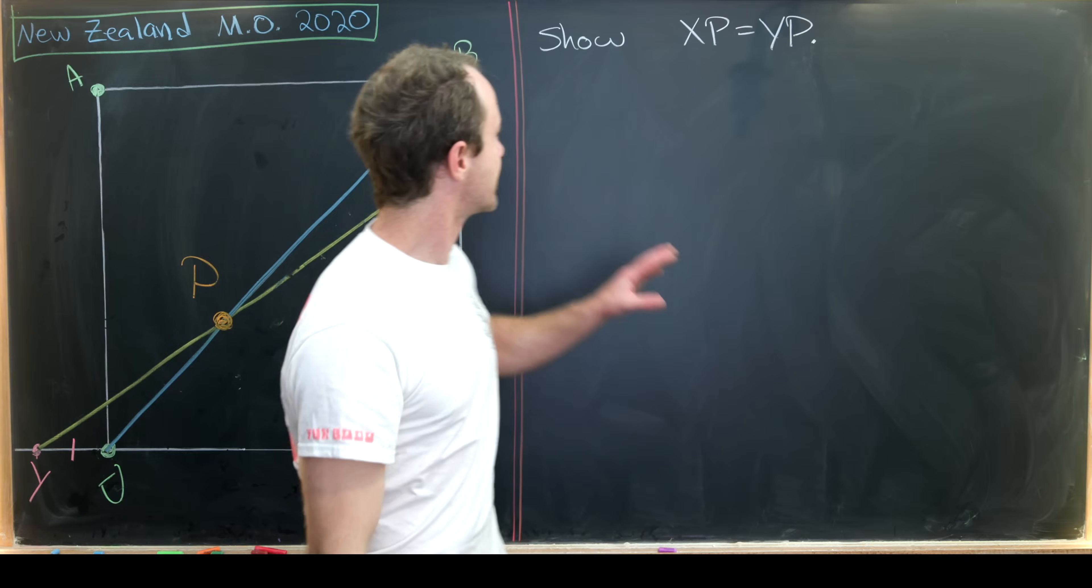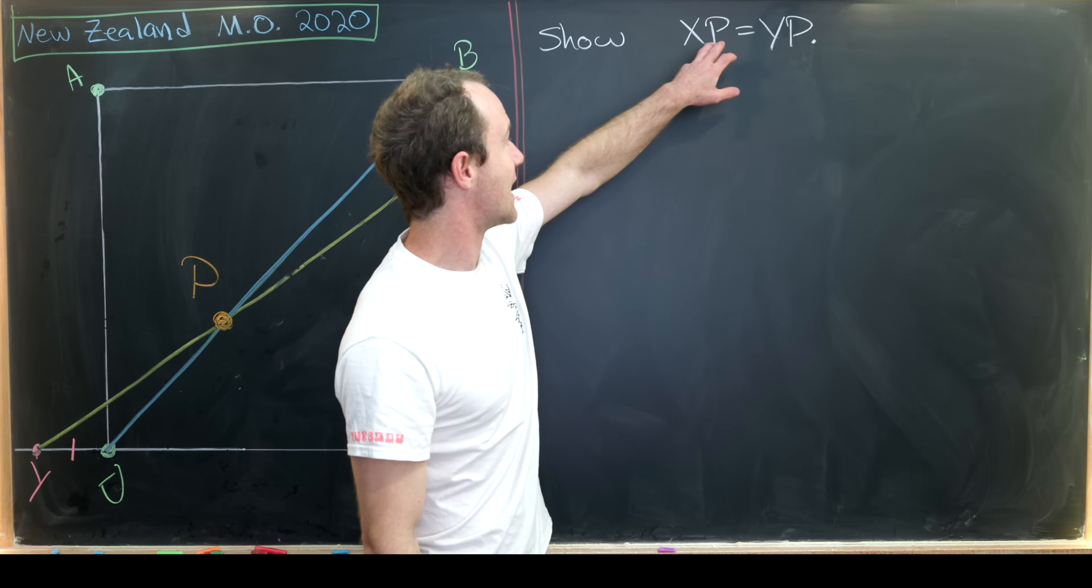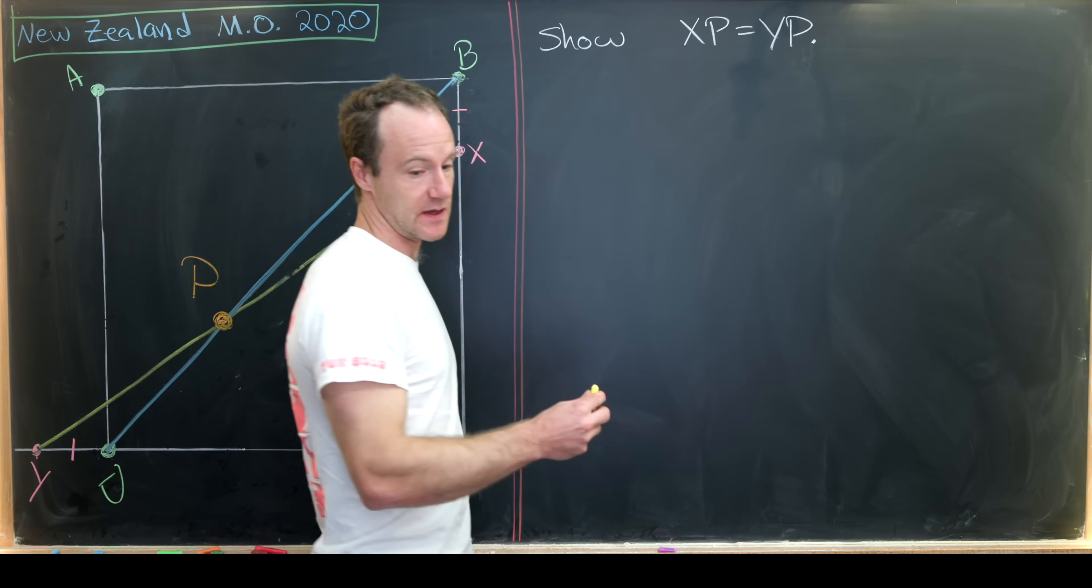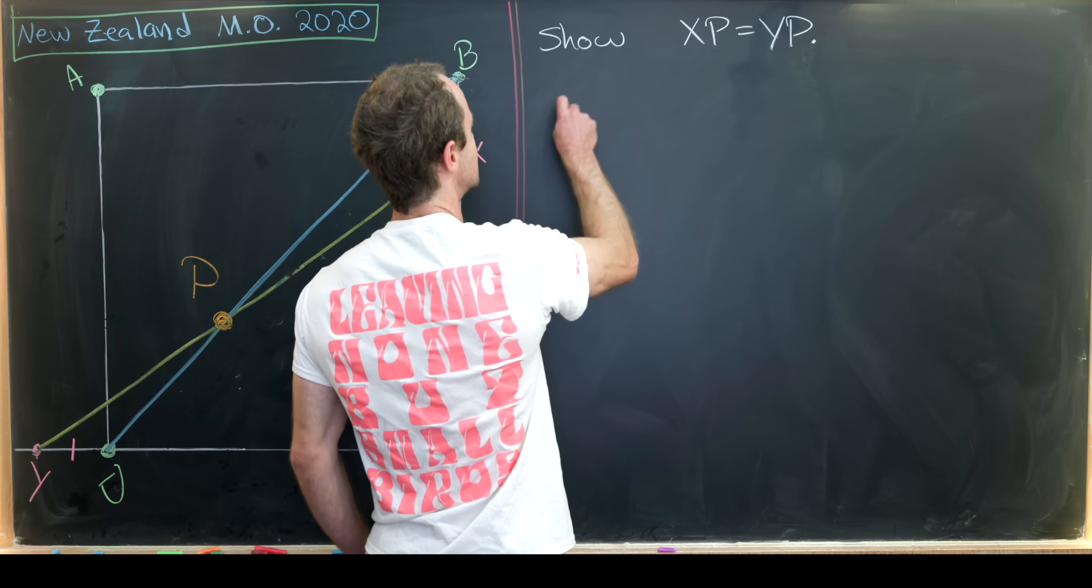So in other words, what we'd like to show is that the length from X to P is the same thing as the length of the segment YP. Okay, so let's see how we can do this.